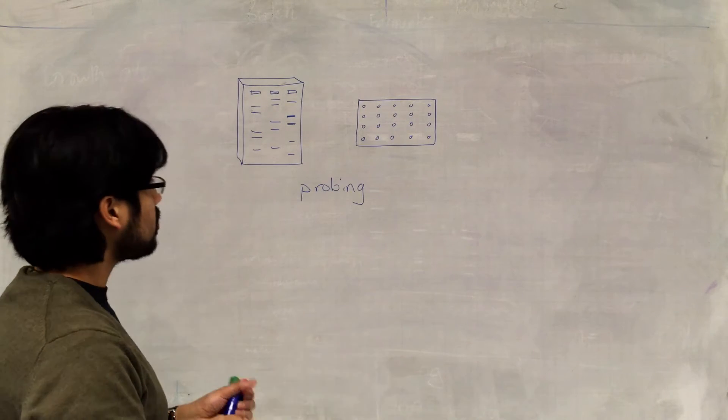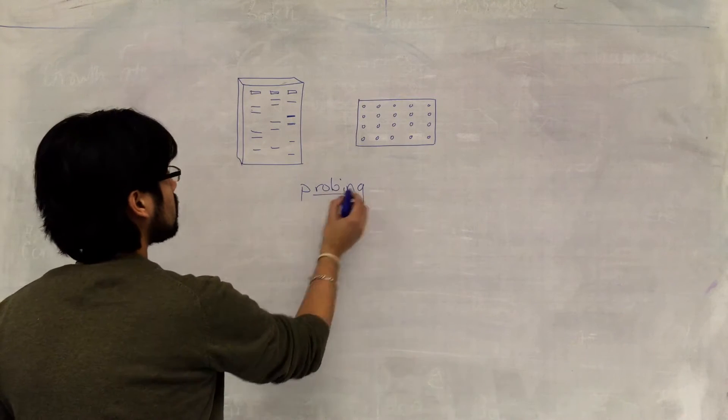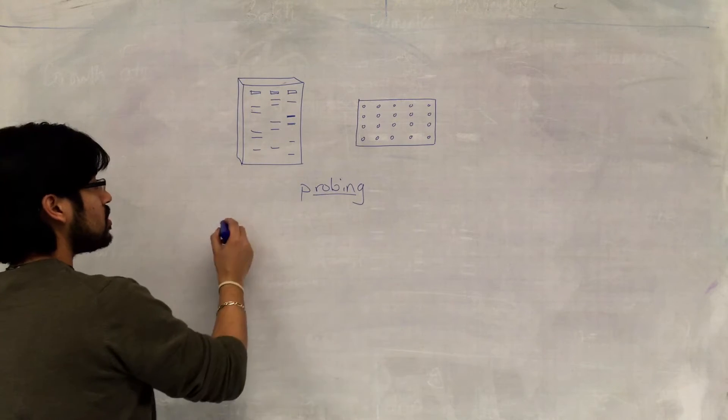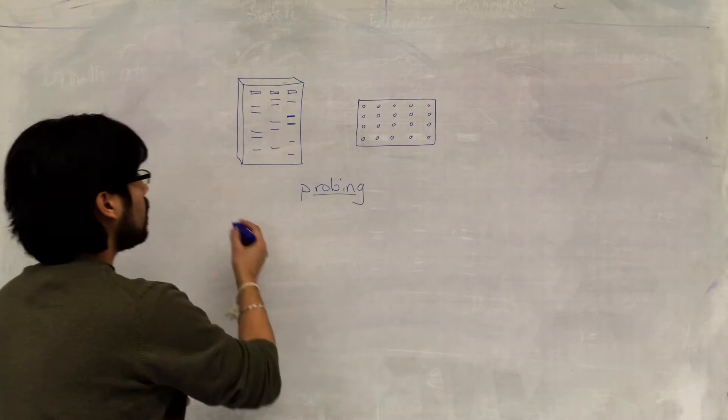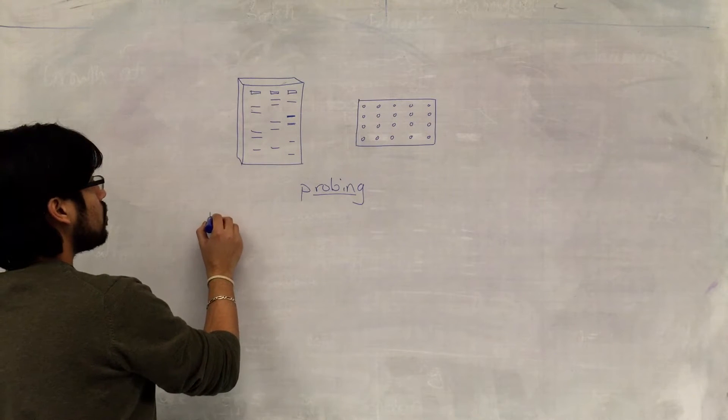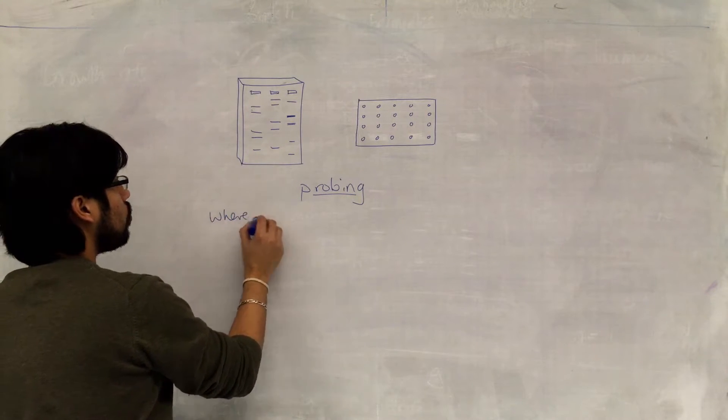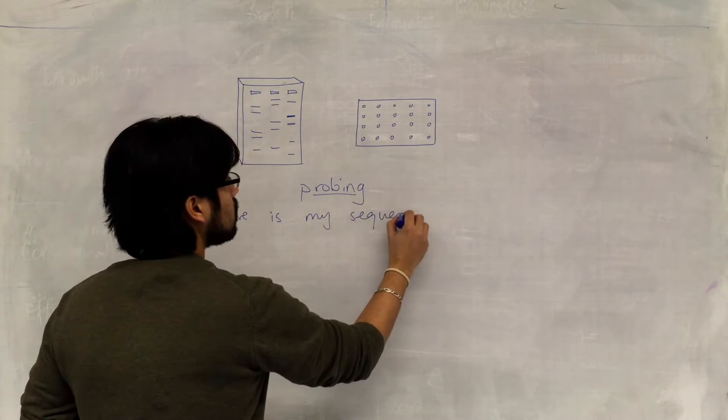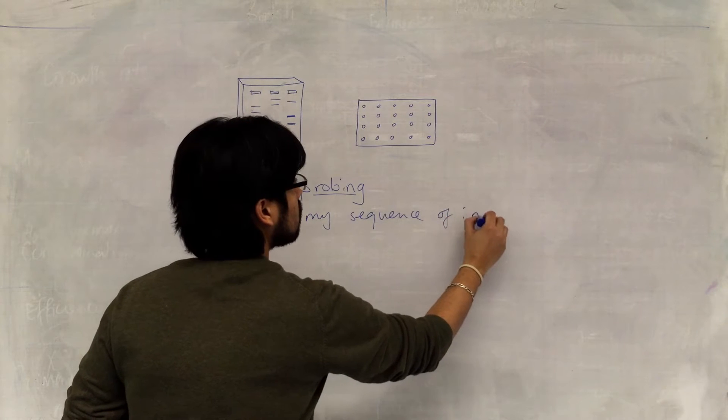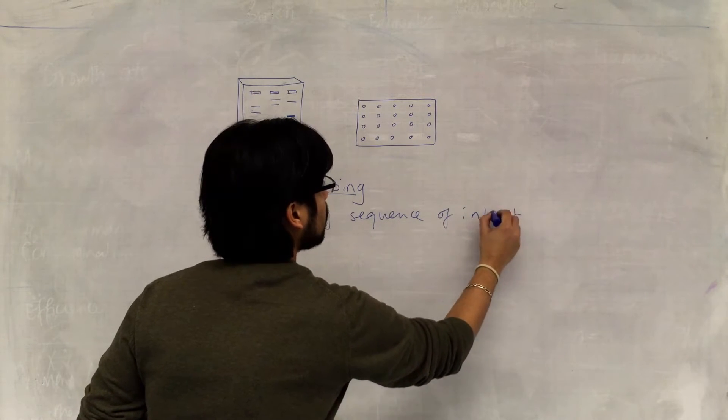So I guess probing is all about answering this question. I've got my genomic sample, and I've separated DNA out in some way, but I still need to know where is my sequence of interest.